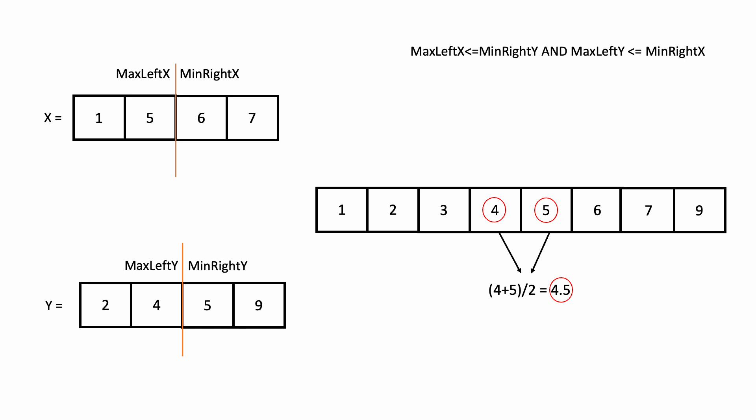If somehow you can use binary search to partition arrays x and y such that max_left_x ≤ min_right_y and max_left_y ≤ min_right_x, then we have found the elements of interest which will help us find the median in the two arrays.